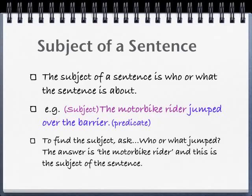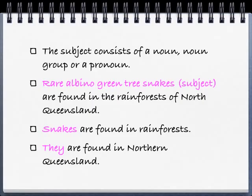The rest of the words in the sentence are the predicate. The subject consists of a noun, a noun group, or a pronoun. For example: 'Rare albino green tree snakes are found in the rainforest of North Queensland.' What is found? Rare albino green tree snakes — so that is the subject. The predicate is: are found in the rainforest of North Queensland. Instead of writing snakes, we could put a pronoun in instead, and then they becomes the subject.